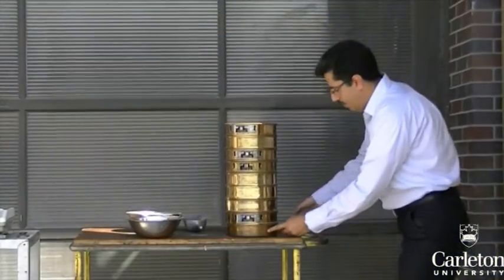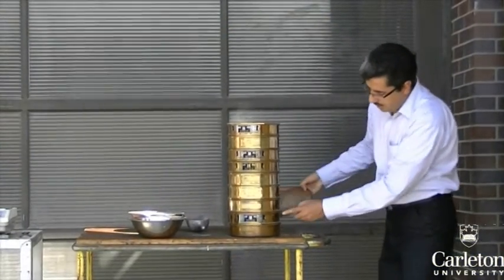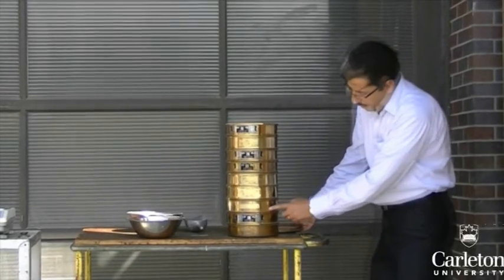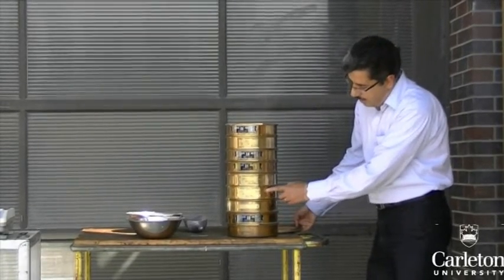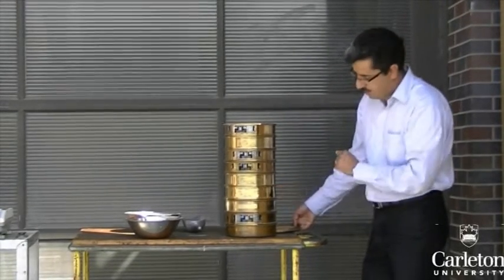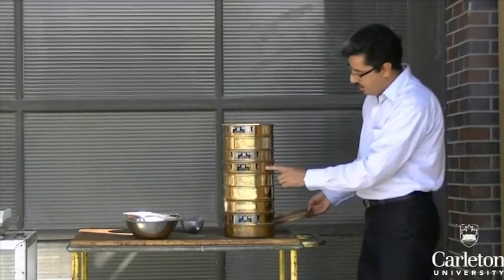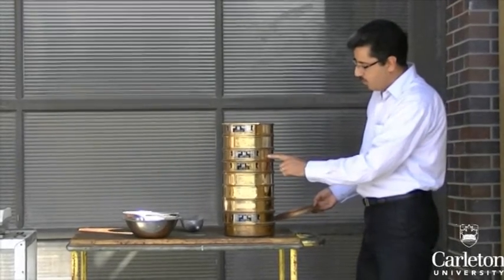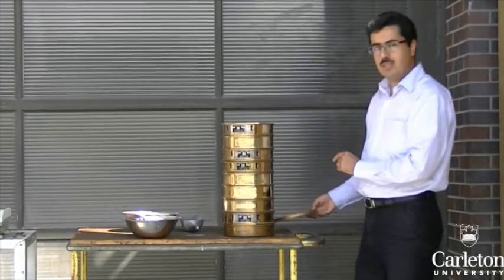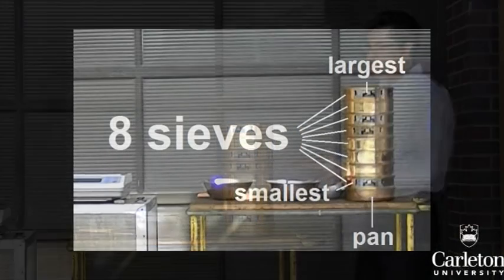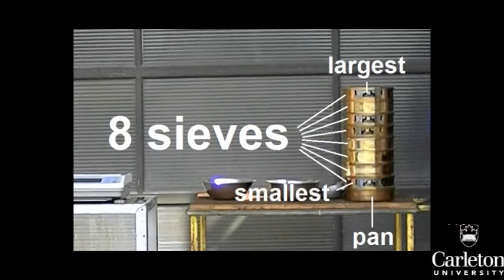In this stack, in order from bottom to top, we have sieve number 200, number 100, number 60, number 10, number 4, quarter inch, half inch, and three quarter inch. We are using 8 sieves, as that is the maximum number of sieves that a shaker can hold at one time.